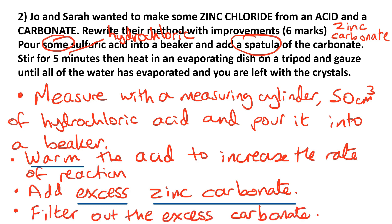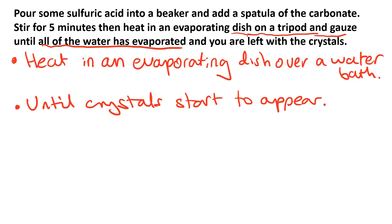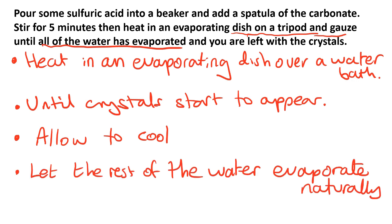Next, what we'll need to do is filter out that excess carbonate. The next thing we need to spot in the method is they're putting the evaporating dish straight on the tripod and gauze, so as an improvement we could suggest they heat the solution in an evaporating dish over a water bath. Also, instead of heating it until all the water's evaporated, we only heat it until the crystals start to appear. Then we'd need to allow it to cool so that the zinc chloride becomes less soluble and more crystals start to form. Then let the rest of the water evaporate naturally and finally dry it in an oven.